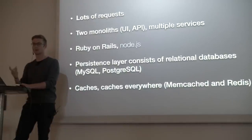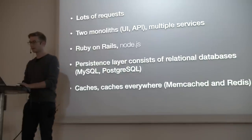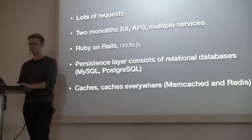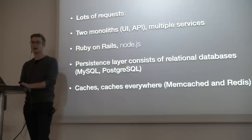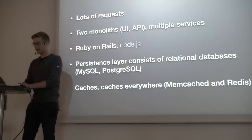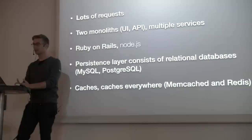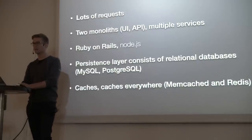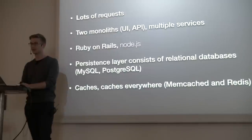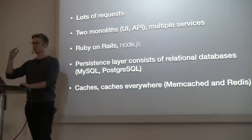We did everything on Ruby on Rails. Ruby on Rails has served us very, very well. We have some Node.js but we don't really use it all that much. For persistence, we store everything in relational databases — MySQL and PostgreSQL. At scale, we have to have caches on top of caches on top of caches. If you're handling that many requests, no matter how good your relational databases are, they won't be able to keep up. So we cache everything.